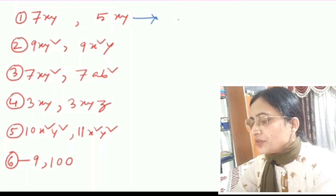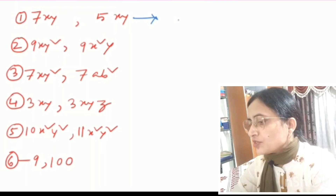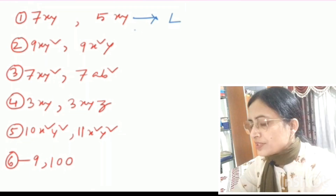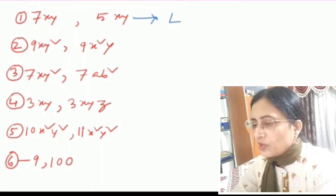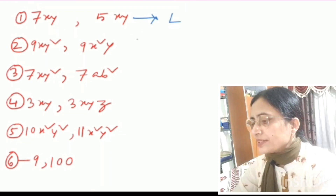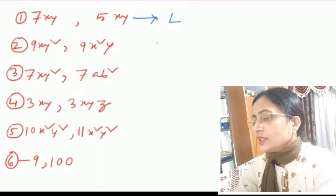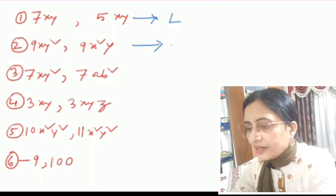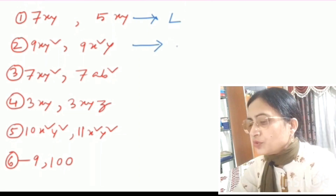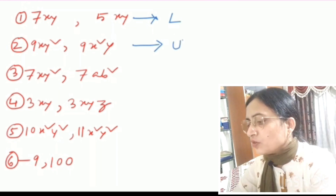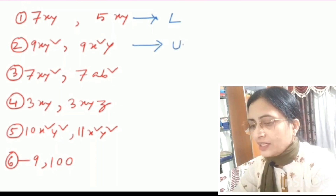In the second example, 9xy² and 9x²y — the power of x in the first term is 1, and in the second term the power of x is 2, so they have different powers and are therefore unlike terms. Since we already found different powers for x, there is no need to check the power of y.